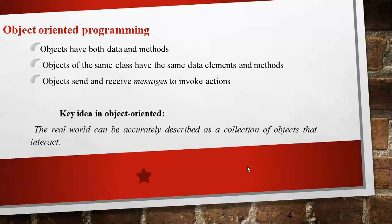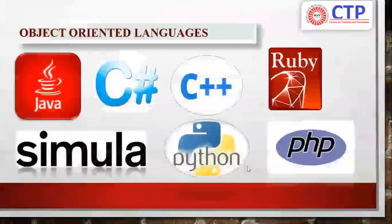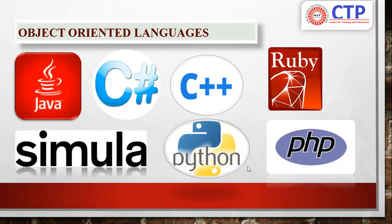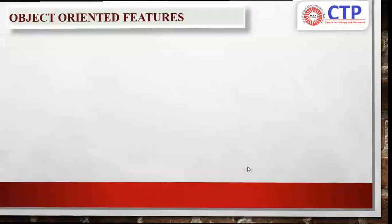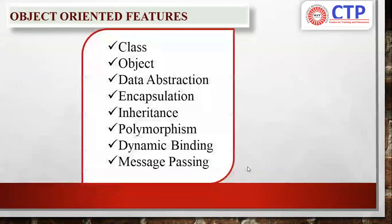Some object oriented programming languages are: Java, C-Sharp, C++, Ruby, Simula, Python, and PHP. All of these are object oriented languages. Among them, Java is a pure object oriented language, Simula is a pure object oriented language, and C-Sharp is a pure object oriented language. Now let me see the object oriented features. The common and most core object oriented features are: Class, Object, Data Abstraction, Encapsulation, Inheritance, Polymorphism, Dynamic Binding, and Message Passing.